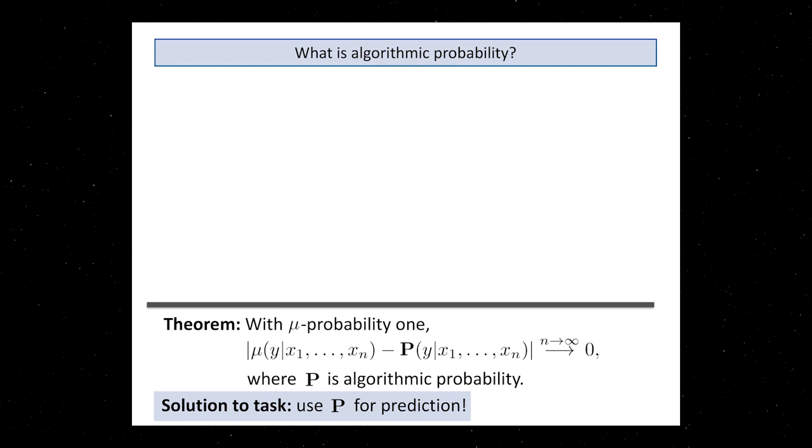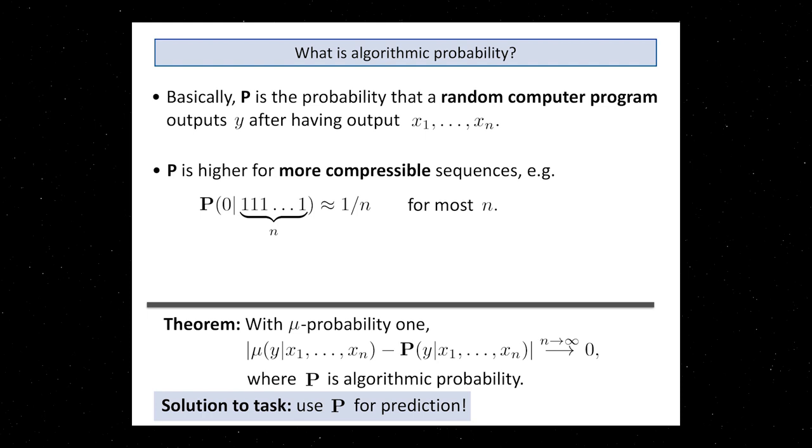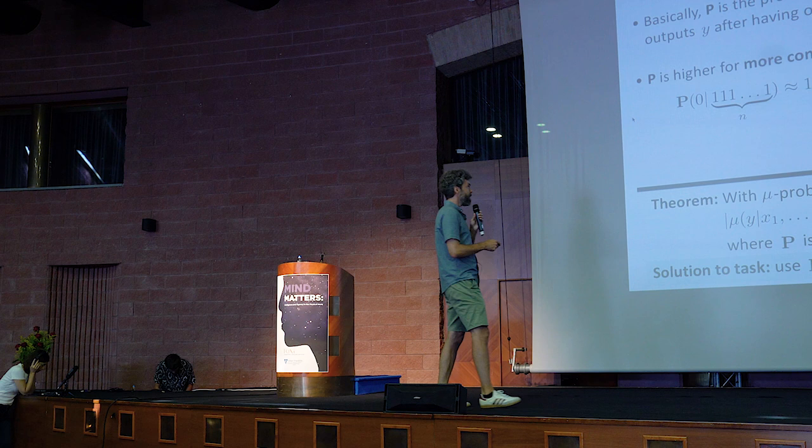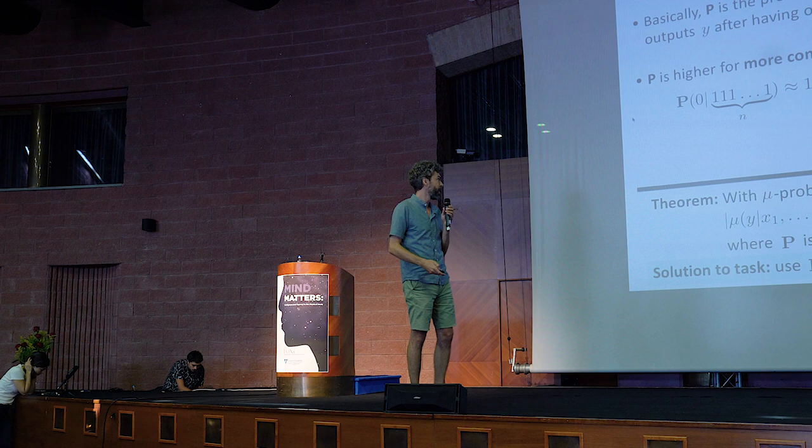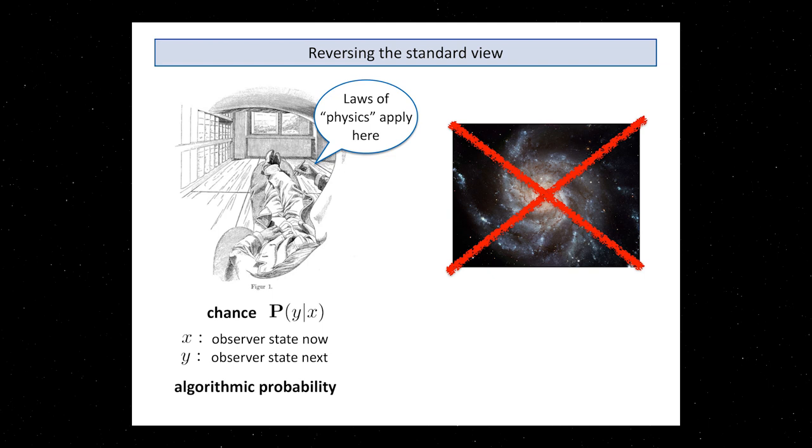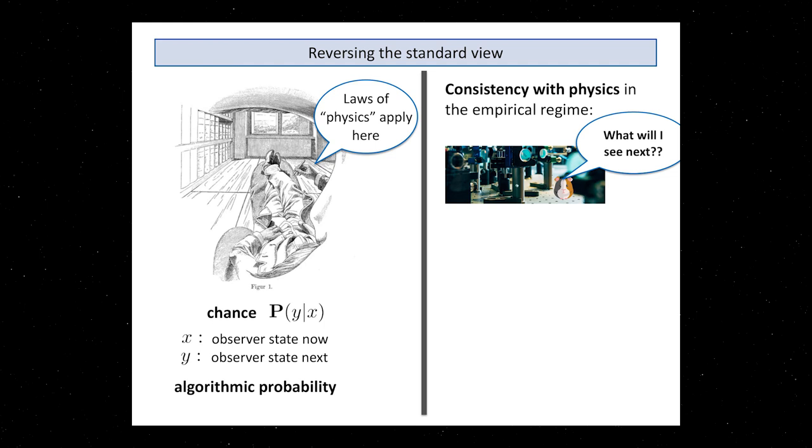What is algorithmic probability? In a nutshell, it's basically the probability that a random computer program will output your string. For example, suppose you have seen bits that have been 1, 1, 1, 1, 1 all along, then it turns out that the algorithmic probability that your next bit is a 0 will be small. If you follow this prescription, you will predict that the next bit will probably also be a 1. So this is a measure that embodies some version of Occam's razor, or of universal induction. So this is my hypothesis here, that there's a chance of your next state which is given by algorithmic probability.